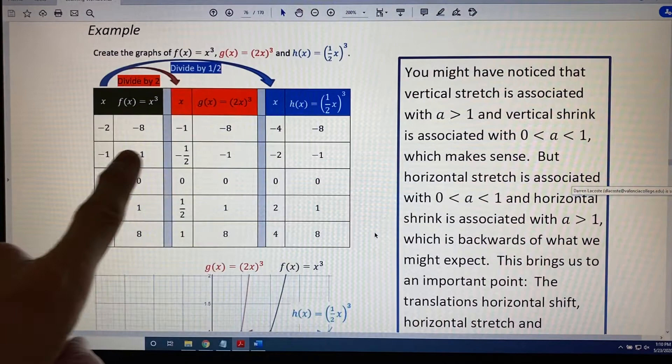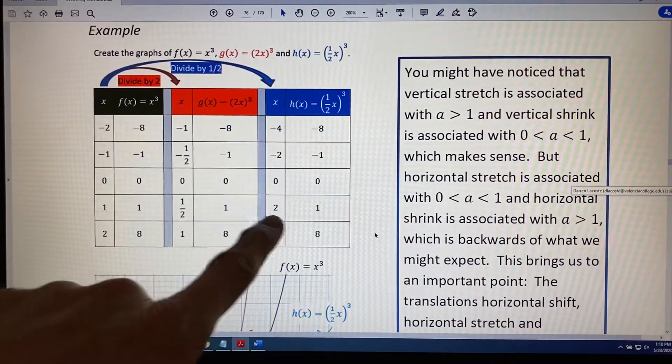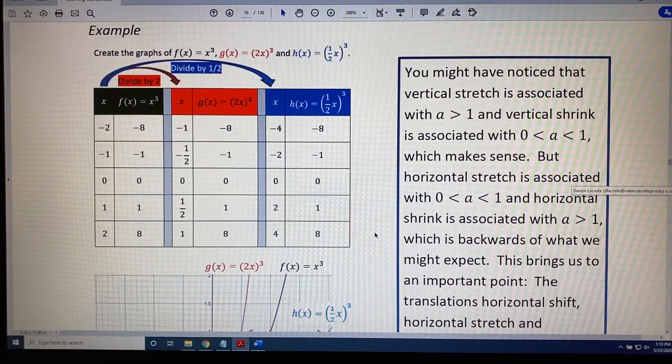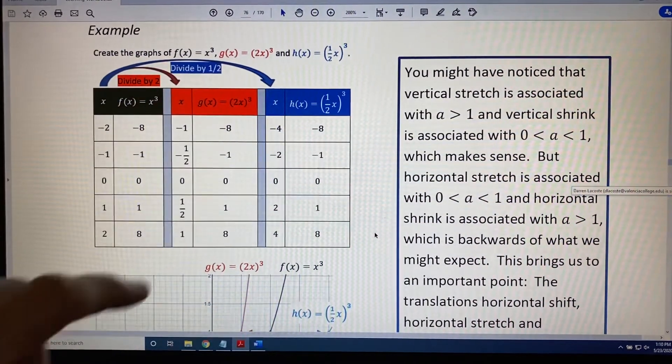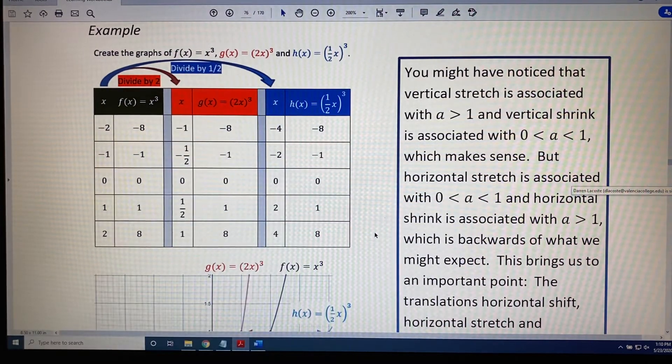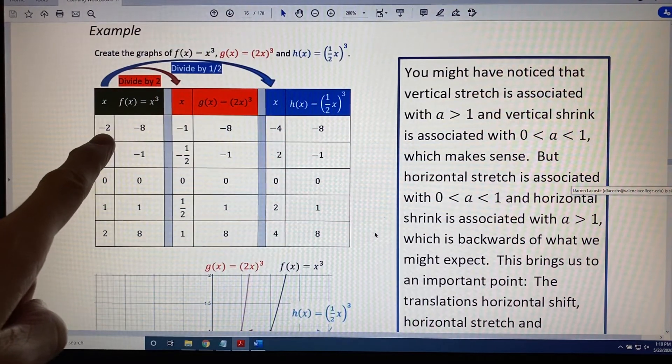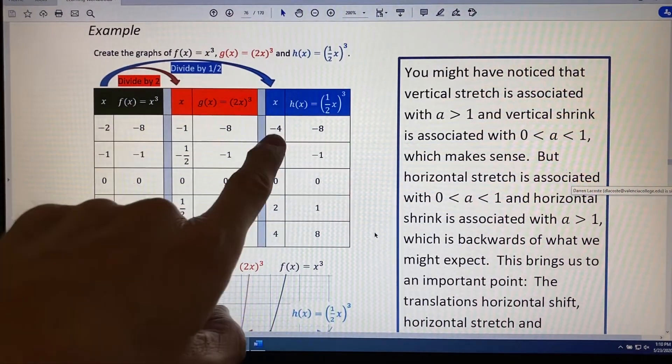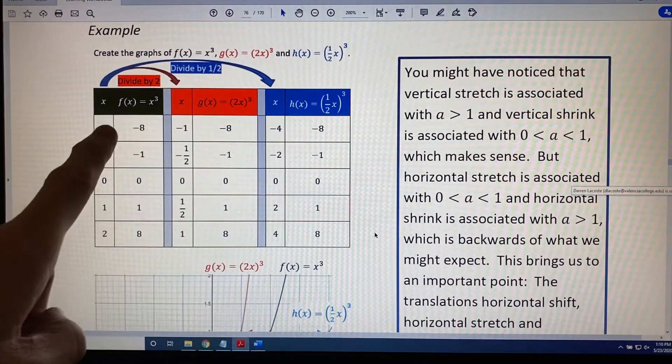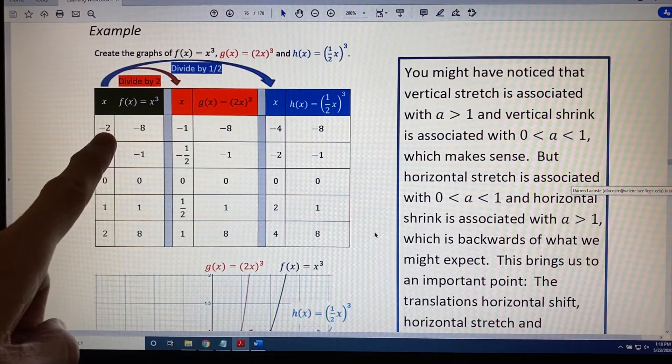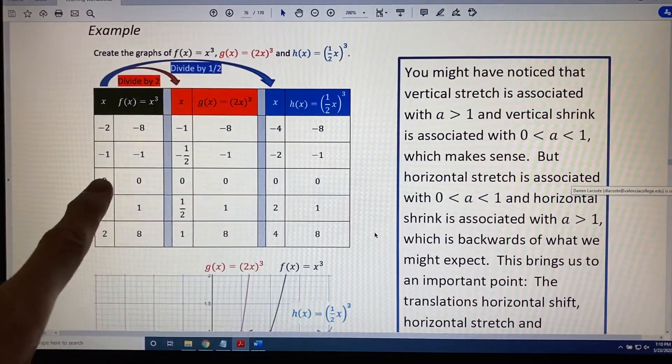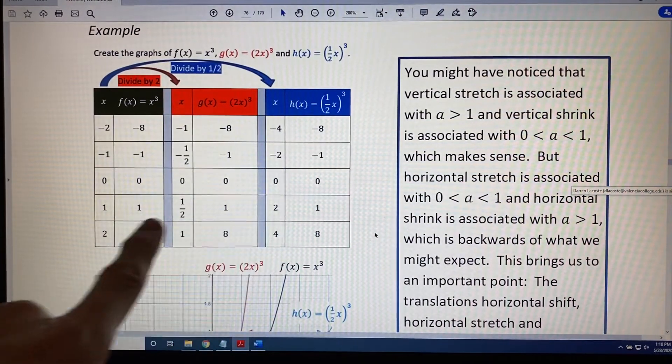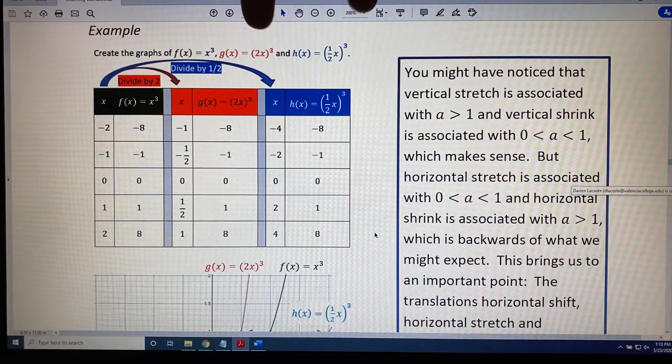So even though I'm going to write it as divide the x's by ½, the result is that all of the x's are in fact being doubled. This is an important distinction. When we talk about it, we use the language divide by ½, but when we actually do the math, we think about it as multiplying by 2. So negative 2 divided by ½ is negative 4, or you might think negative 2 times 2 is negative 4. The negative 1 becomes negative 2, the 0 is 0, the 1 is 2, the 2 is 4. The y's don't change.